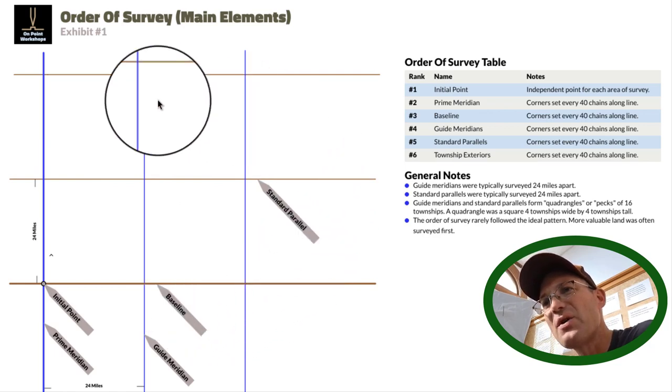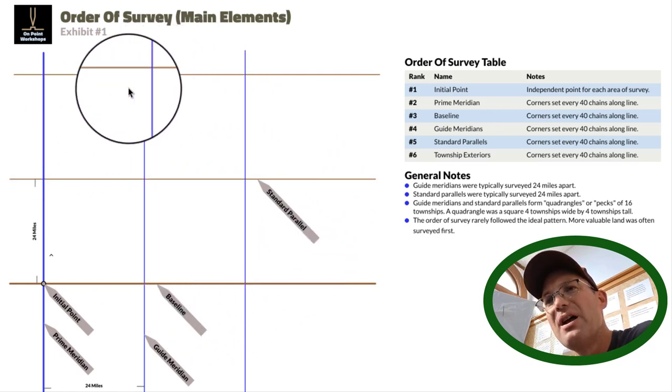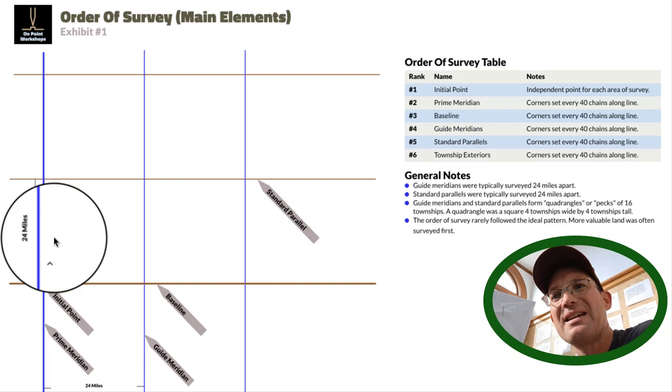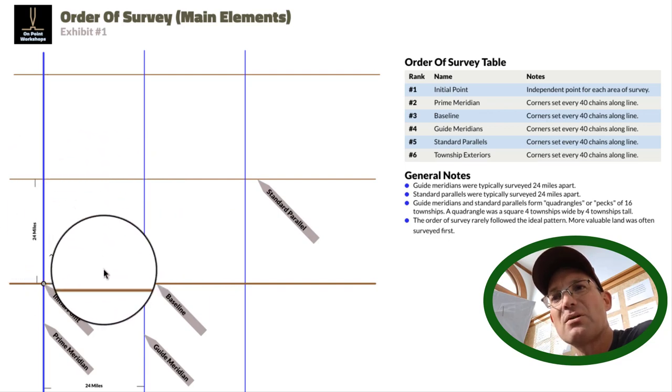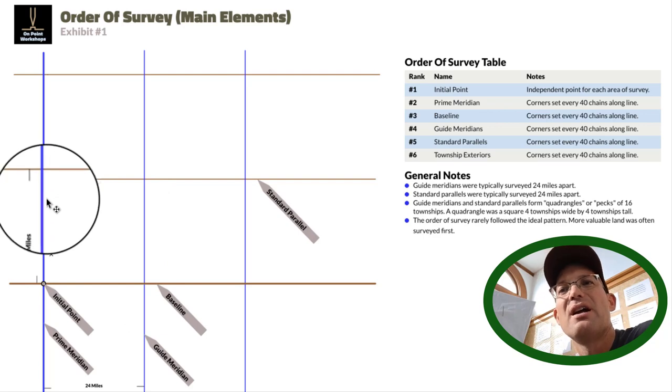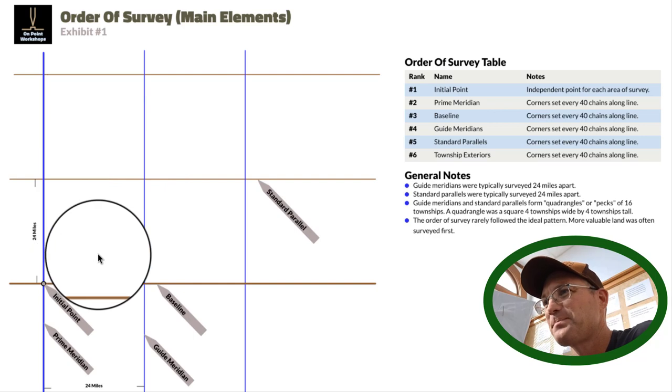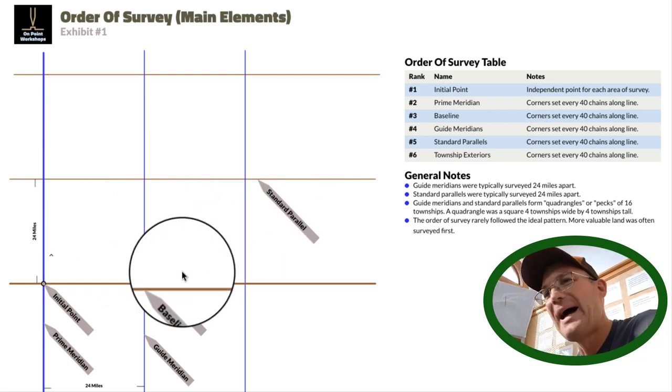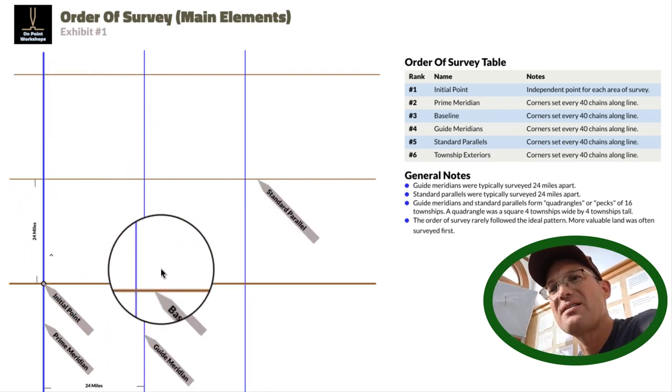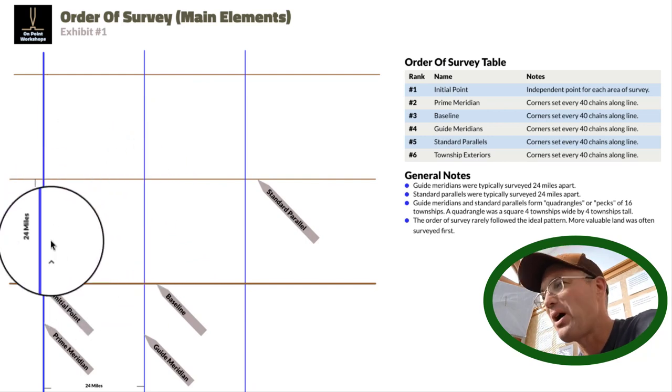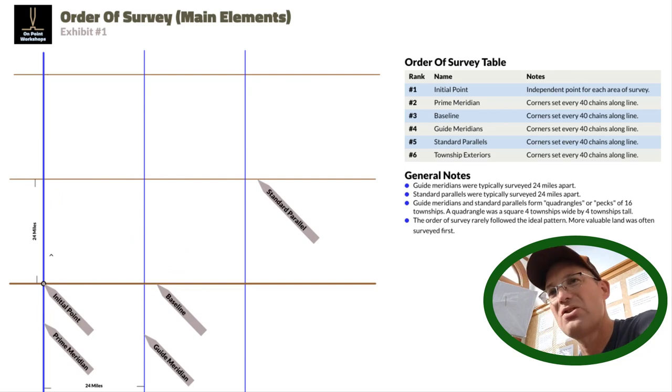At this point in the system, we have a grid. We've got these grids that are 24 miles by 24 miles. That is four by four townships, so it's 16 townships. After they get the baselines and the meridians around one of these 24-mile by 24-mile areas, they can go in and survey the township exteriors.